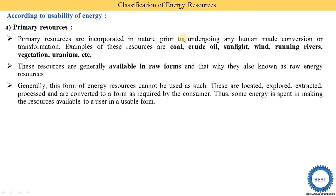Suppose crude oil is available at a particular place. We need to remove the crude oil from that place, which requires drilling into the earth. We spend some energy for the drilling and removing the crude oil. Then it is processed in a refinery where it is separated into petrol, diesel, kerosene, and other petroleum products. For all this processing we require some energy.